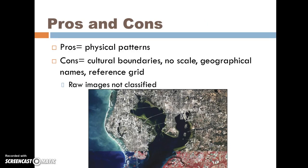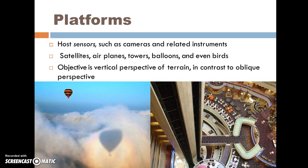When we're looking at imagery, we have the advantage of seeing physical patterns, but we do have disadvantages in that they're not always shown to scale. Some cultural boundaries may not be shown, along with geographical references and so forth. Typically these are raw images that are not yet classified, requiring some interpretation on the part of the viewer.